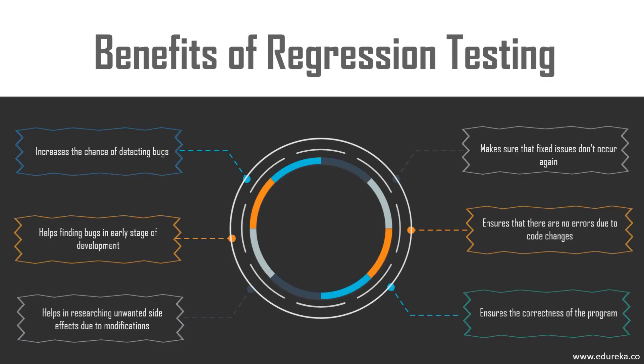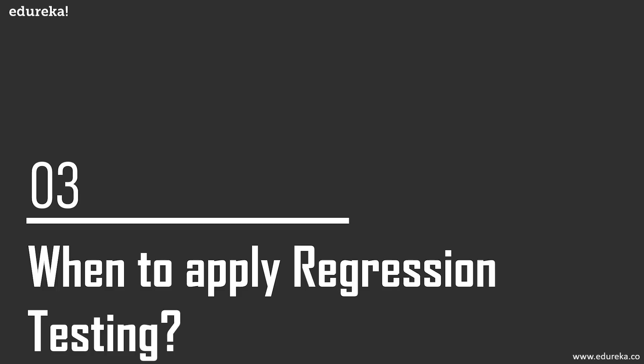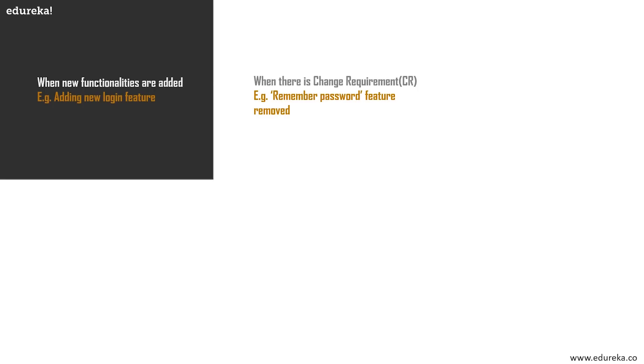In the real world, maintaining a near-infinite regression test set is not feasible, so it's important to know when to perform regression testing. It can be applied at the unit, integration, system, or acceptance testing level. It is recommended when new functionalities are added — for example, if a website allows login only via email and you add Facebook login, you need to verify the entire login functionality to ensure the new feature hasn't affected the old login capability.